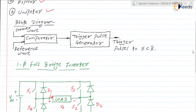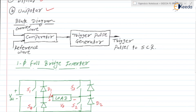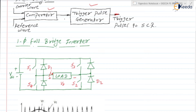We are having the generalized block diagram for the Pulse Width Modulation. It consists of two blocks: one is the Comparator and the second one is the Trigger Pulse Generator. The Comparator compares the Carrier Wave and the Reference Wave, and accordingly the Trigger Pulse Generator provides or blocks the triggering pulses. This is the simple block diagram of the Pulse Width Modulation Technique.